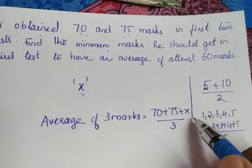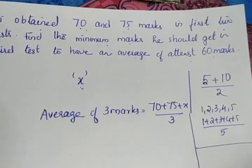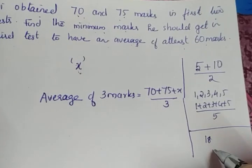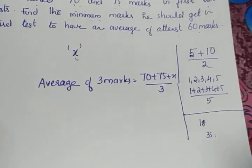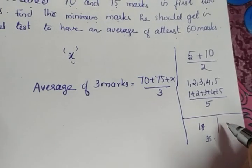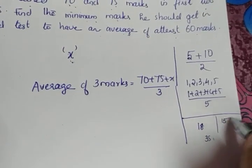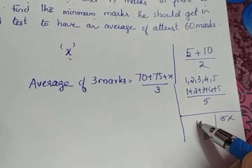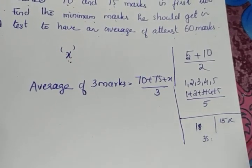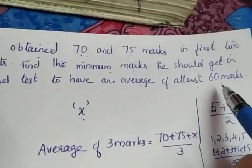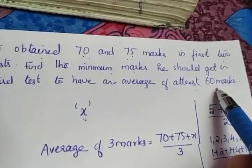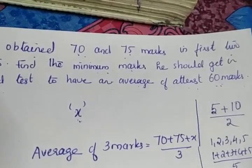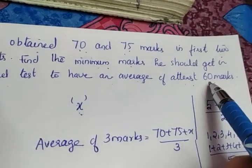For example, for a driving license, the minimum age is 18 years. That means a person who is 35 years old can also appear for the driving test. But what about someone who is only 15 years old? No, they cannot. So minimum means: if 18 is the minimum age, anyone older than 18 can appear for the test. Same way here, the minimum mark is 60, and any average more than 60 is also valid.